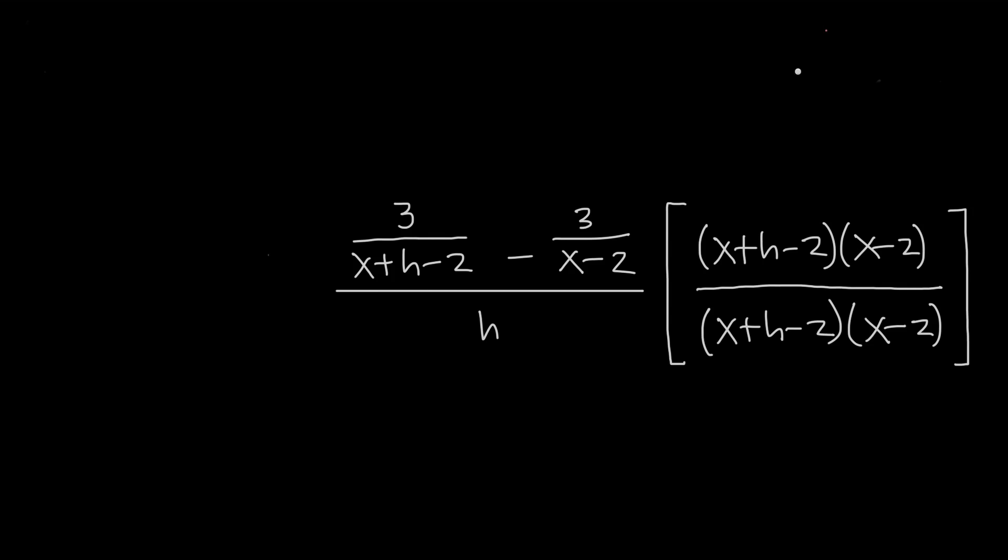So now we just need to do some distribution. When we multiply the common denominator by 3 over x plus h minus 2, it'll cancel out the x plus h minus 2, leaving us with just 3 times x minus 2.